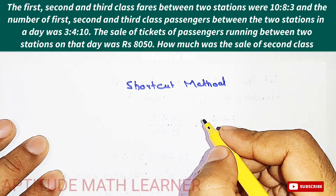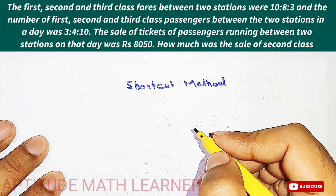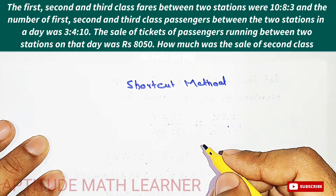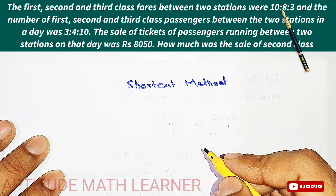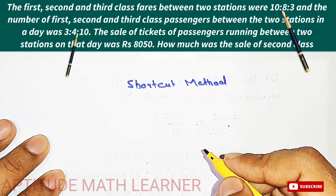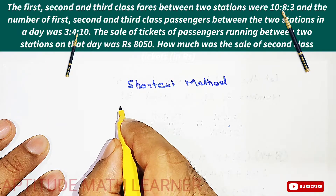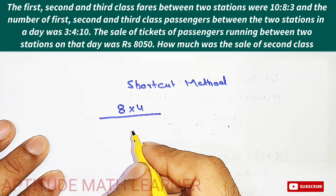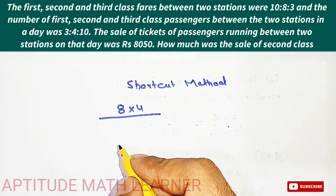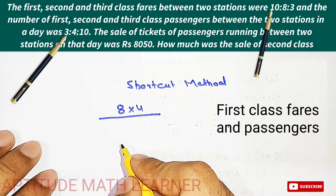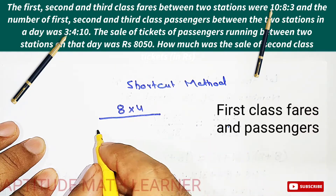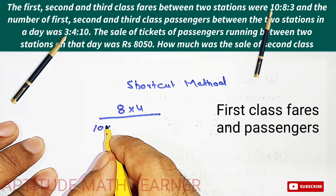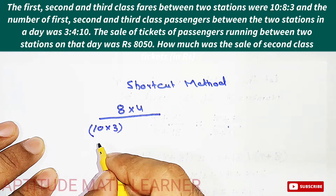This shortcut method can save your time in competitive exams. For the second class, the fare ratio is 8 and the passenger ratio is 4. We multiply 8 by 4 for the second class. For the first class, the fare ratio is 10 and the passenger ratio is 3, so we multiply 10 by 3.